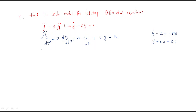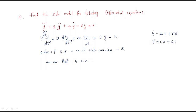The order of the differential equation gives the number of state variables. The maximum order is 3, so we have 3 state variables. Therefore, we should assume that three state variables are available and take them as x1, x2, and x3.